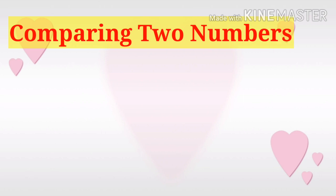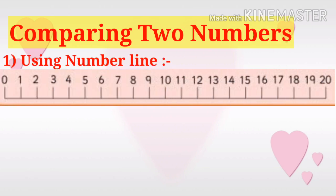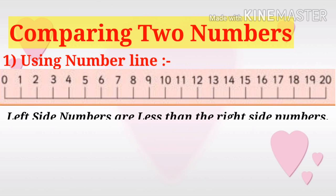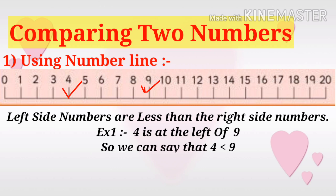To compare two numbers we can use a number line. Consider a number line from 0 to 20. We can observe that left side numbers are less than the right side numbers. Consider two digits: 4 and 9.